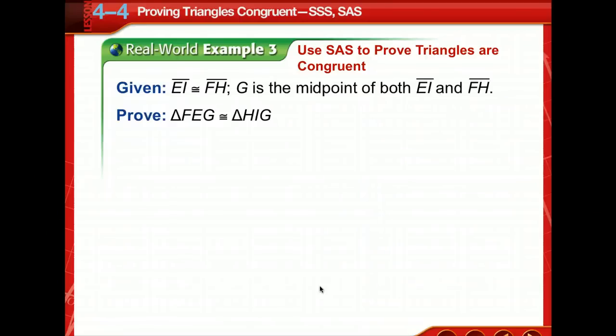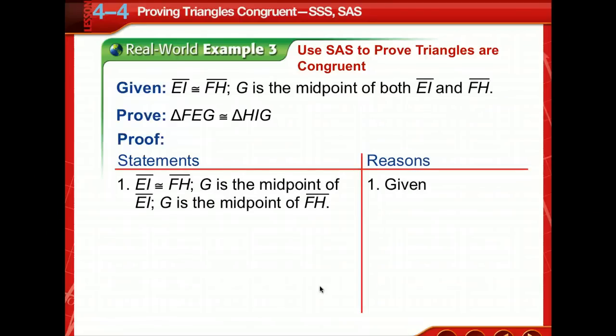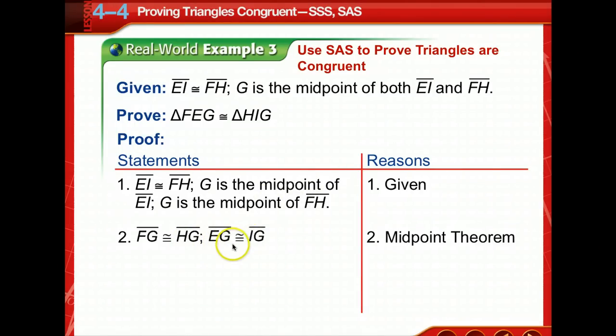So here's the given and what we're trying to prove. So starting with a two-column proof, we write what's given. Of course, using the midpoint theorem, we know that FG is congruent to HG and EG is congruent to IG. So take a moment to look at your diagram that you drew. FG is congruent to HG, and EG is congruent to IG. Yep, we get that.